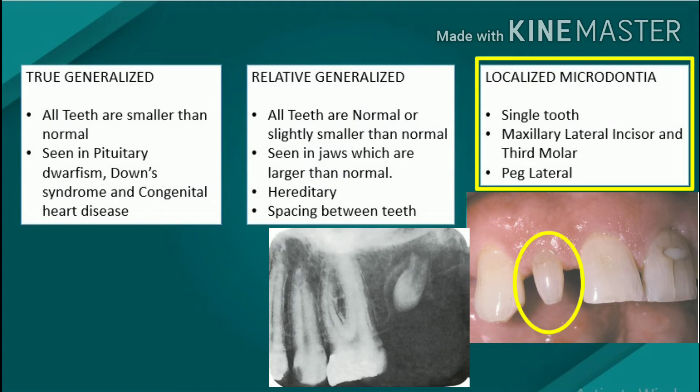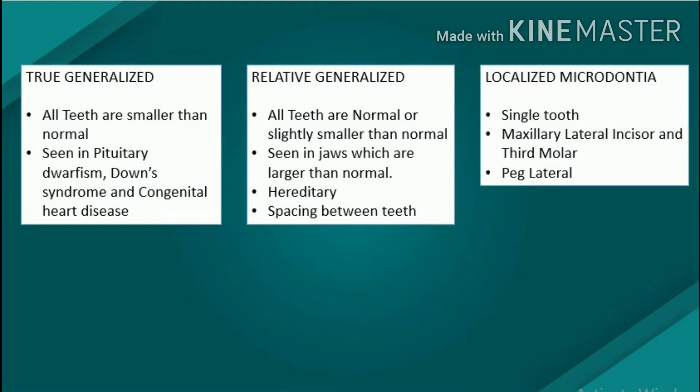Instead of exhibiting parallel or diverging mesial and distal surfaces, the sides converge or taper together incisally, forming a peg-shaped or cone-shaped crown. The root of such a tooth is frequently shorter than usual. Treatment of the dentition is not necessary unless desired for aesthetic considerations. Maxillary peg laterals often are restored to full size by porcelain crowns.